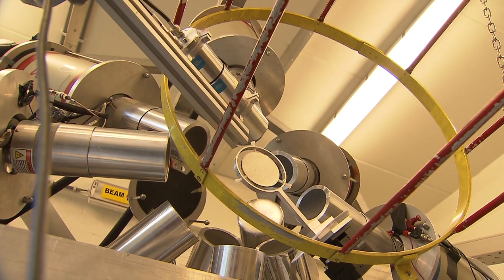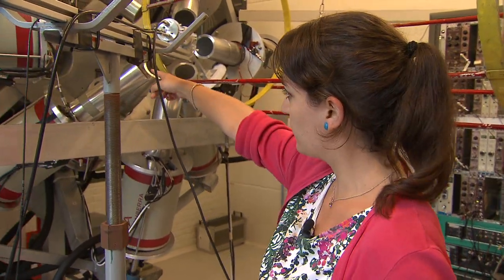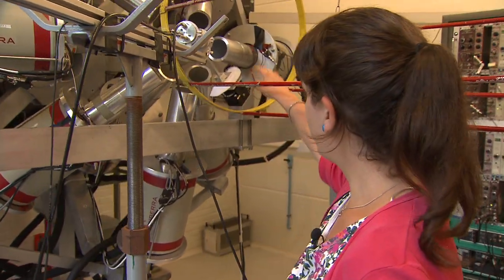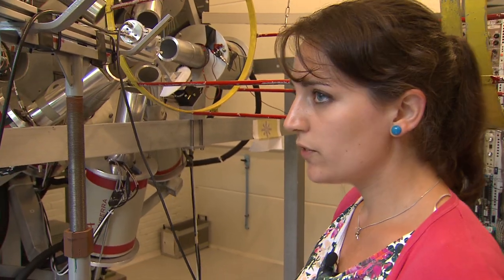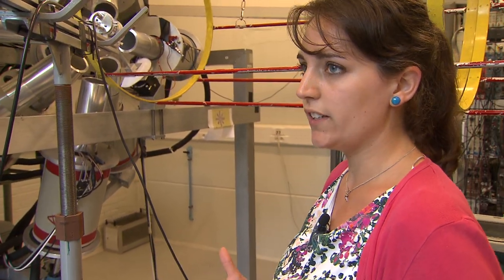It is placed inside the neutron beam of GELINA that are coming from that part. They arrive on the disk and when the neutron hits the target, part of them induce the emission of radiation.